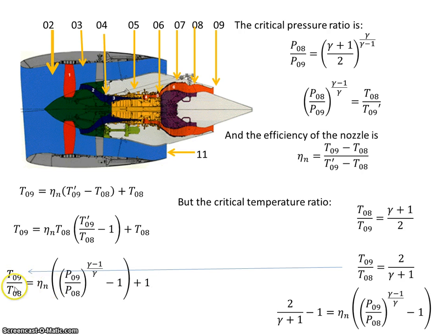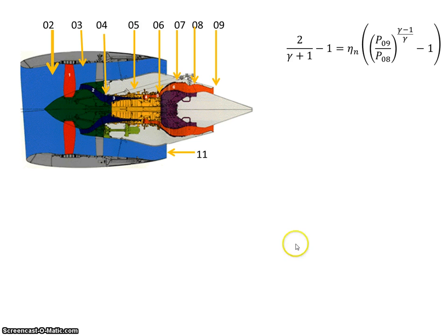So I can say that instead of T9 over T8, I can use 2 over gamma plus 1 minus 1. So I'm going to bring this 1 across, which is equal to this expression here. That's it carried forward.